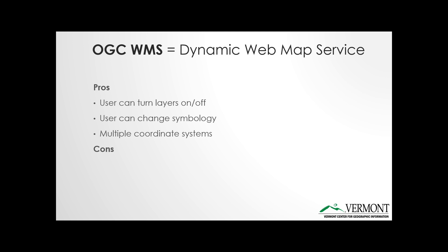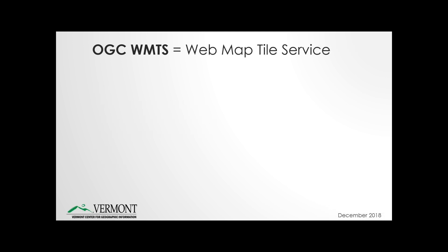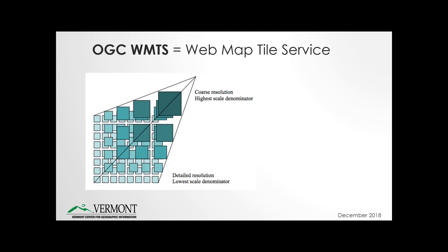However, there are some cons — it is a slower type of service. The OGC WMTS, or web map tile service, is a pre-tiled or pre-cached raster service where the maps are pre-generated as raster tiles on the server and stored, so that when a request comes in, all that needs to be done is the pre-generated tiles are returned to the client.